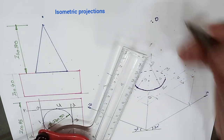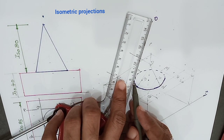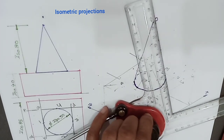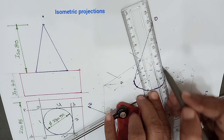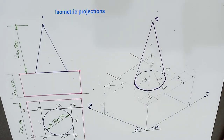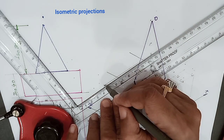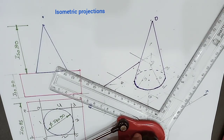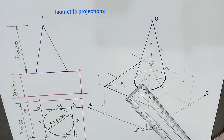Mark the apex as O, then join the extreme points of the ellipse to O to form the slant sides of the cone. Some lines are not visible and some lines are visible. The visible lines are drawn as dark continuous lines, and non-visible lines are drawn as dotted lines. The visible portion of the top base of the square prism is drawn accordingly, determined based on the front view direction.